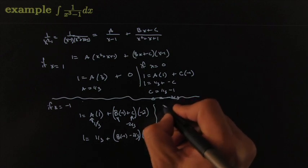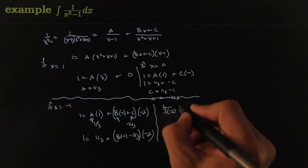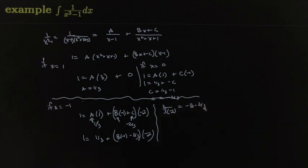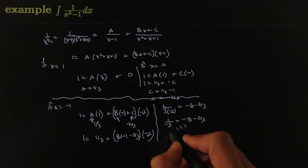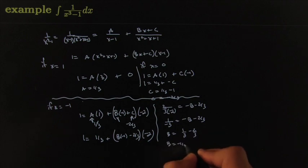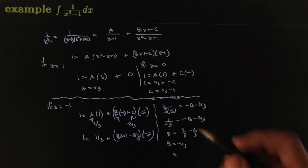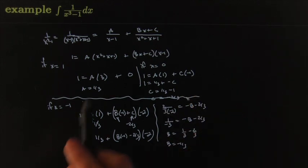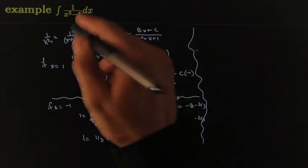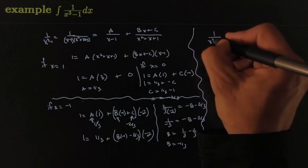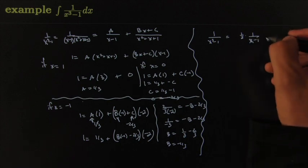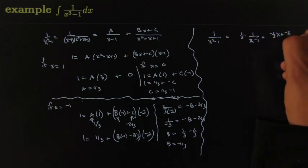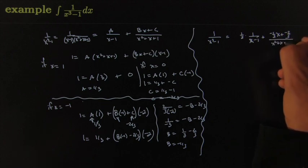So we've got it: B = -1/3, C = -2/3, A = 1/3. The original integral 1/(x³ - 1) can be rewritten as: (1/3) · 1/(x-1) + [(-1/3)x + (-2/3)] / (x² + x + 1), all times dx.